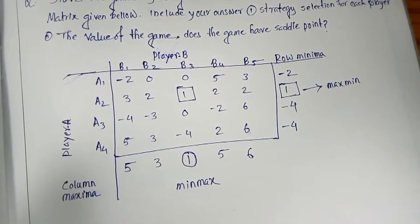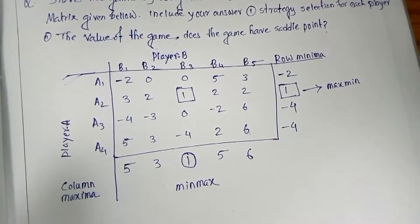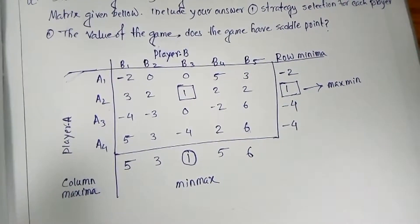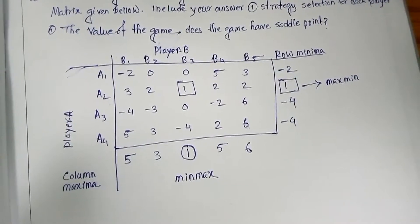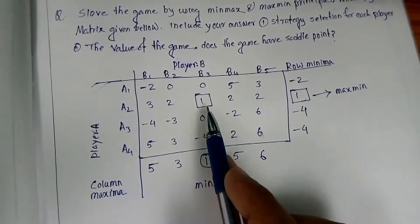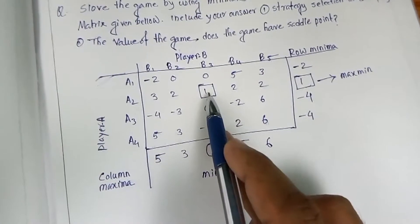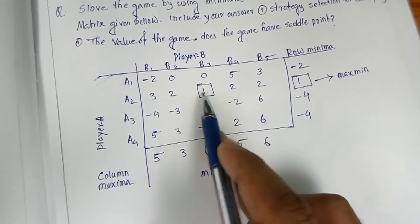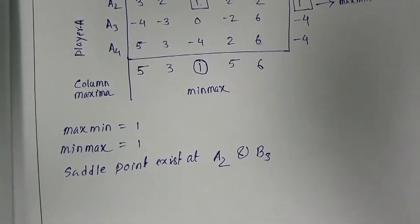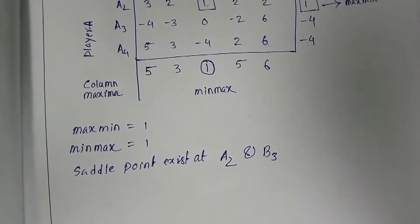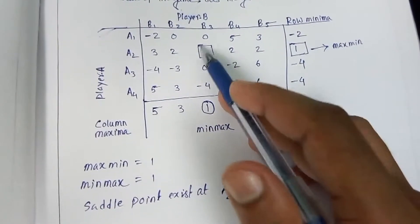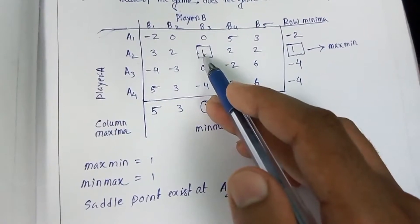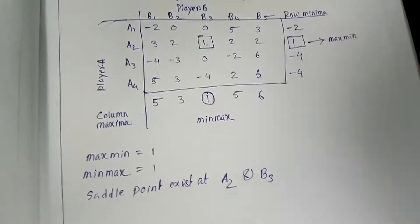We have already completed about 80% of the problem. The maximin value is 1 and the minimax value is 1. The saddle point exists at the intersection, which is at position A2 (row 2) and B3 (column 3). So the saddle point is at A2 and B3 because their intersection lies on row 2 and column 3.